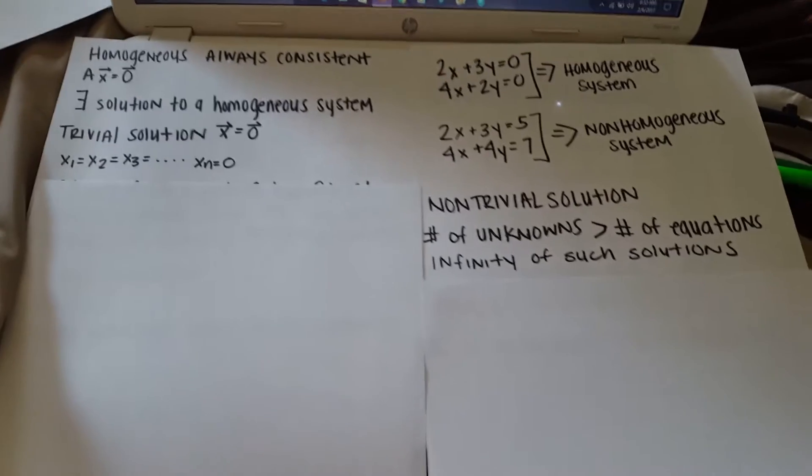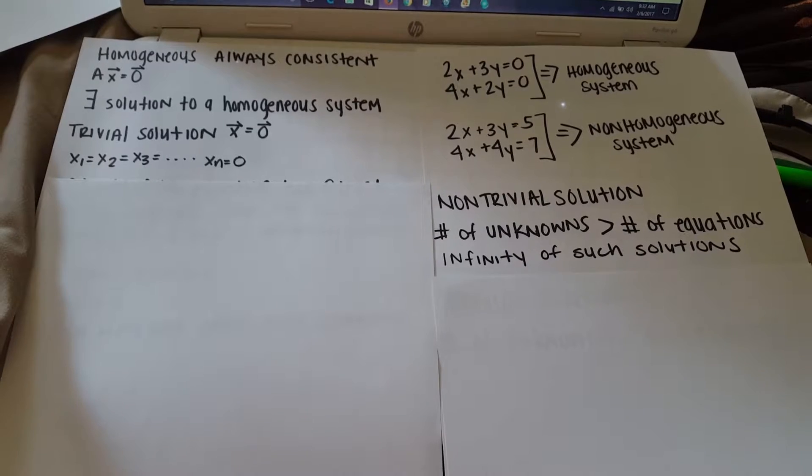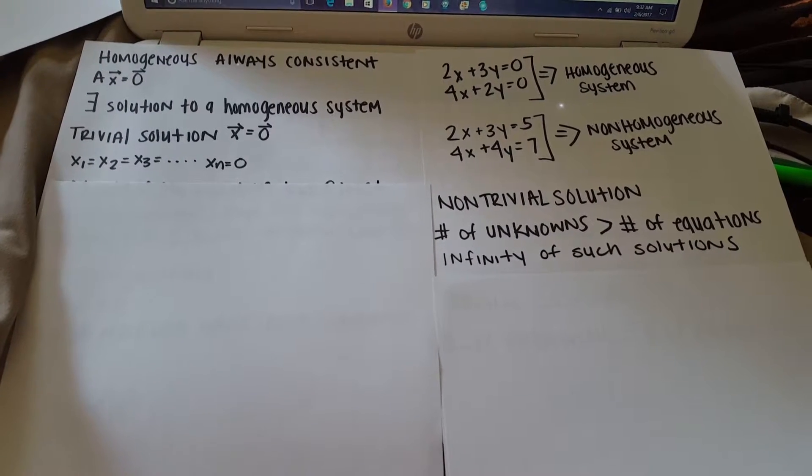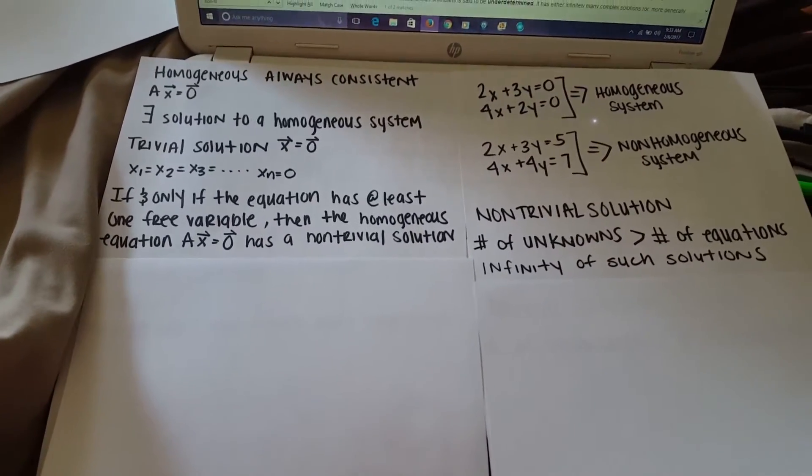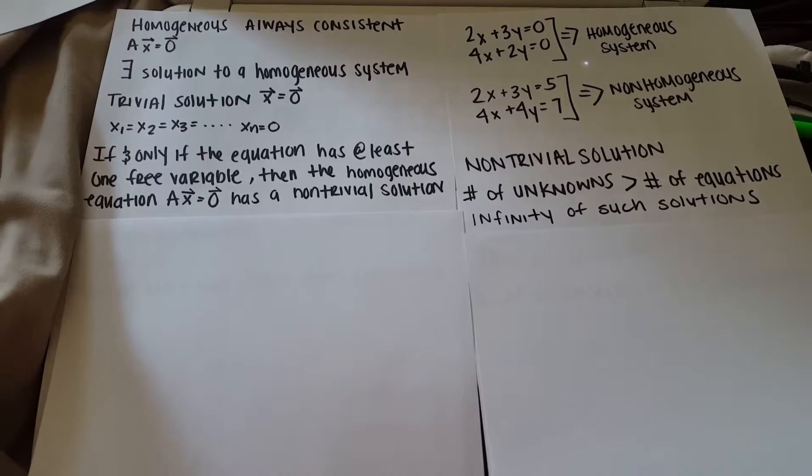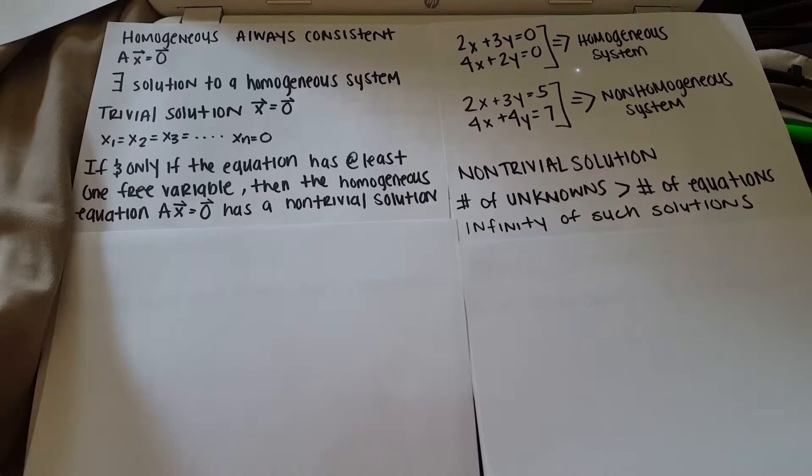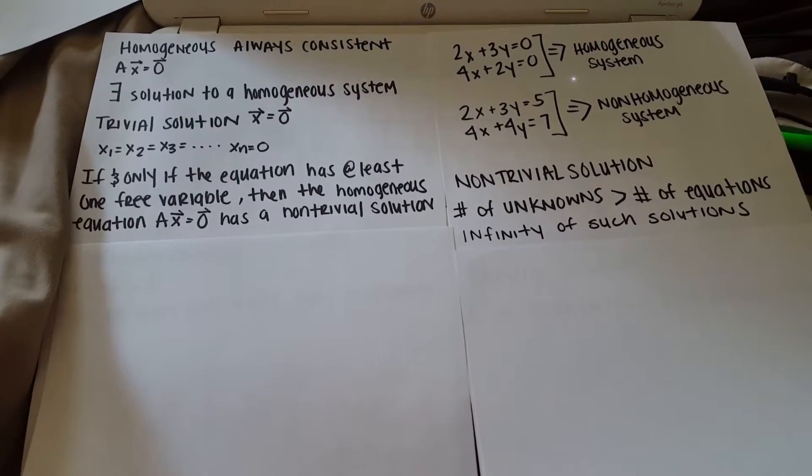For a non-trivial solution, it's easy to identify if the number of unknowns is greater than the number of equations, which suggests that there's infinitely many solutions. You can also say, if and only if the equation has at least one free variable, then the homogeneous equation matrix A times vector X, which is equal to the vector zero, has a non-trivial solution.